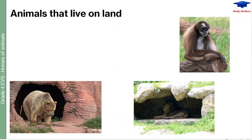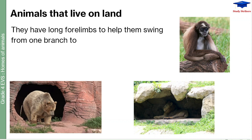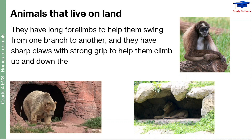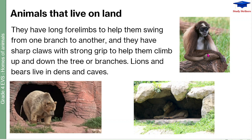Here is a huge bear, a lion, and another kind of monkey which is a large one. Arboreal animals have long four limbs to help them swing from one branch to another, and they have sharp claws with a strong grip to help them climb up and down the tree or branches. You must have seen a monkey swinging from branch to branch.